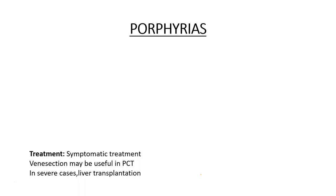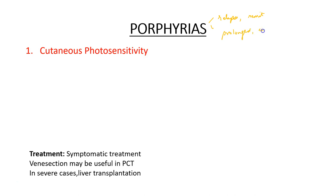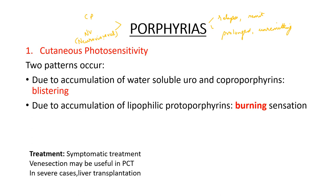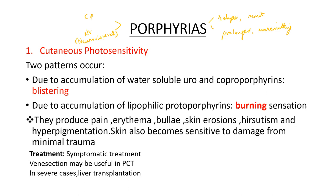Porphyrias are the disorders of heme synthesis. They may be relapsing and remitting, or may follow a prolonged unremitting course. There are two major symptoms: cutaneous photosensitivity and neurovisceral symptoms. In cutaneous photosensitivity, there are two patterns: blistering cutaneous photosensitivity and a burning sensation. There may be skin erosions, bullae, erythema, and hyperpigmentation; the skin also becomes sensitive to damage from minimal trauma.